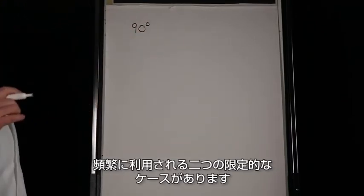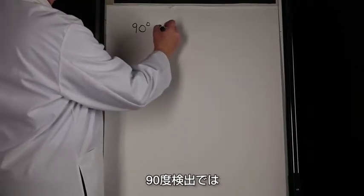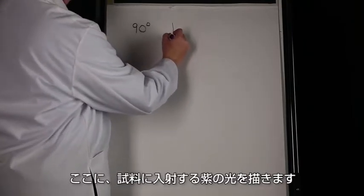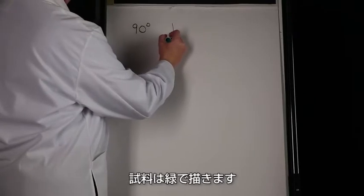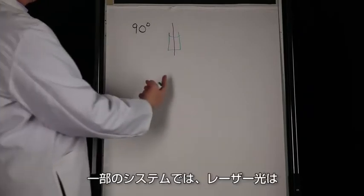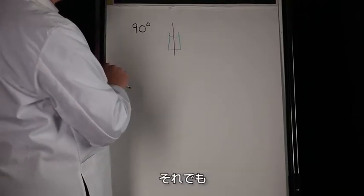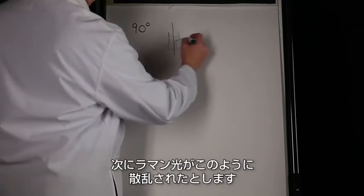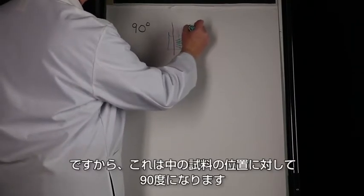One is 90-degree detection. In 90-degree detection, the laser beam enters the sample — I'm going to draw it here as a purple beam coming down into my sample, which I'll draw green again as a cuvette with liquid in it, just for simplicity. The laser beam comes in from the bottom in some of these systems, and then the Raman light is collected at 90 degrees relative to the sample.